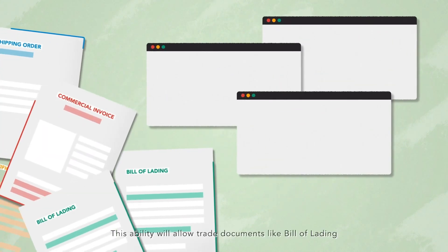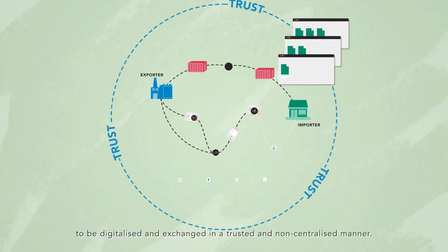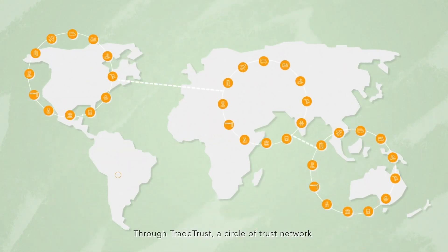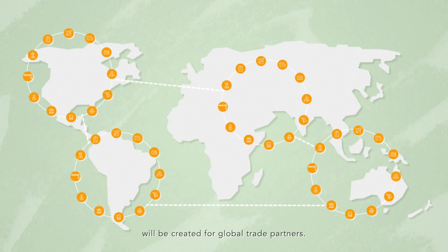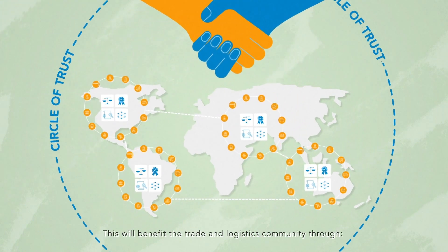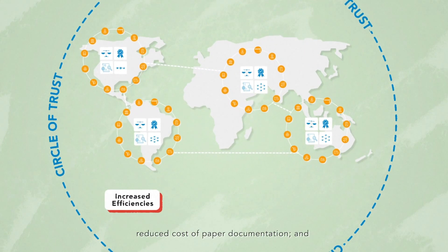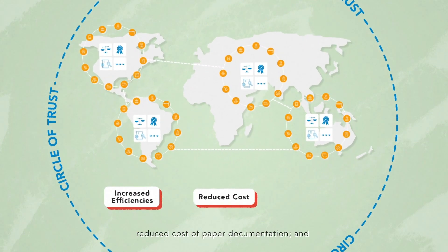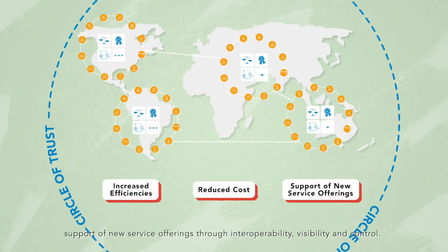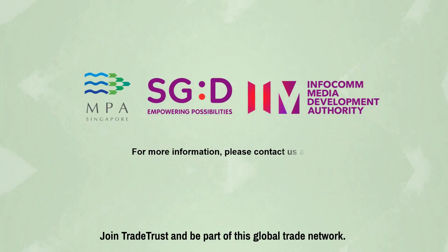This ability will allow trade documents like Bill of Lading to be digitalized and exchanged in a trusted and non-centralized manner. Through Trade Trust, a circle of trust network will be created for global trade partners. This will benefit the trade and logistics community through increased efficiencies, certainty, reduced cost of paper documentation, and support of new service offerings through interoperability, visibility, and control. Join Trade Trust and be part of this global trade network.